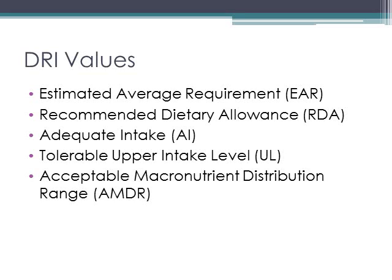We have our Estimated Average Requirement, or the EAR. The Recommended Dietary Allowance, or the RDA. The Adequate Intake, or the AI. The Tolerable Upper Intake Level, or the UL — and if you hear someone refer to this as the tolerable upper intake limit or the upper limit, that's incorrect. And finally, we have our Acceptable Macronutrient Distribution Range, or the AMDR. So let's dig into these a little bit deeper.